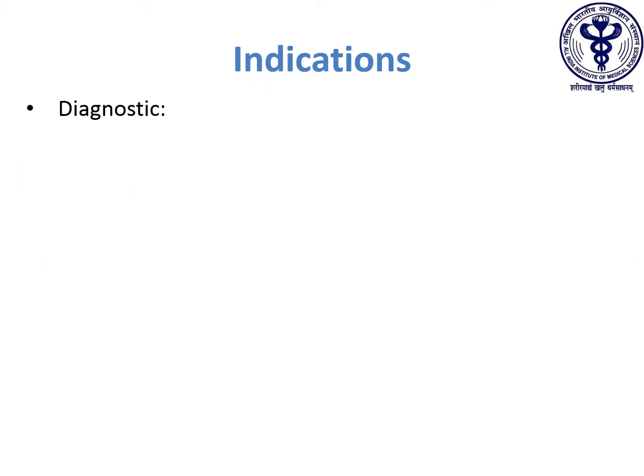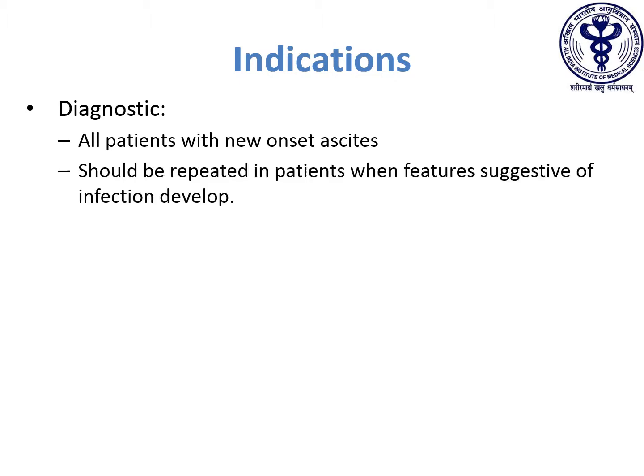The indications for diagnostic paracentesis include all patients with new onset ascites. Diagnostic paracentesis should be repeated in patients when features suggestive of ascitic fluid infection develop. Additionally, surveillance paracentesis to rule out ascitic fluid infection should be performed in all patients with ascites who are newly admitted at the time of hospital admission.